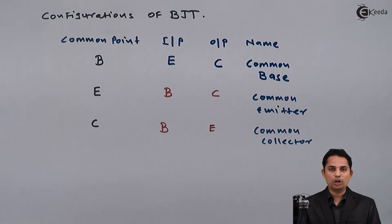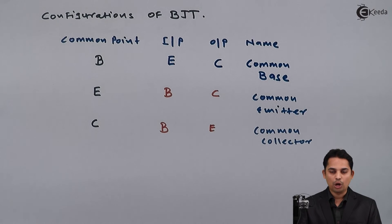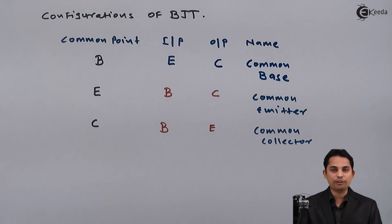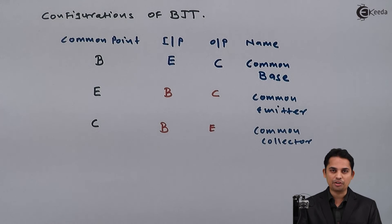So these are the three configurations of BJT: common base, common emitter, and common collector. Out of these three, common emitter configuration is the most widely used configuration in industry and education.